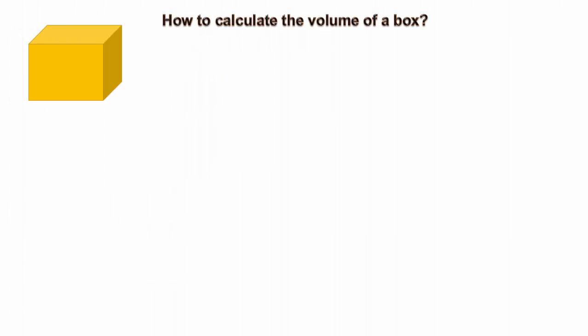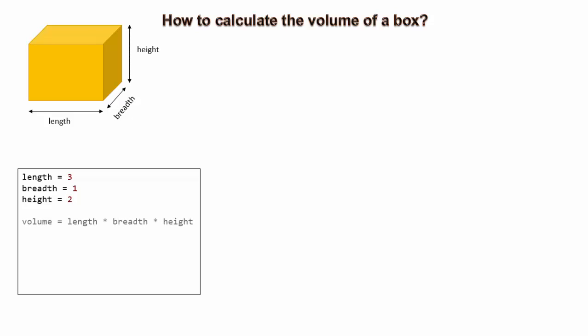Now, let us see one more example. How do we calculate volume of a box? We measure length, breadth, height, multiply them to get a volume. This is normal sequential procedure. Do we see any entity here?